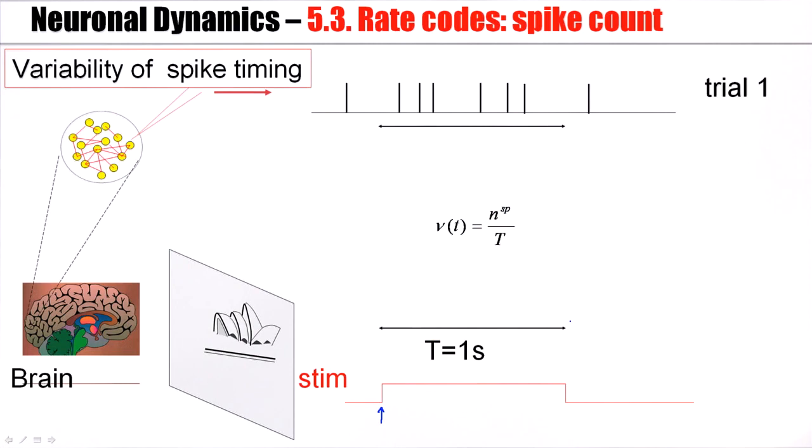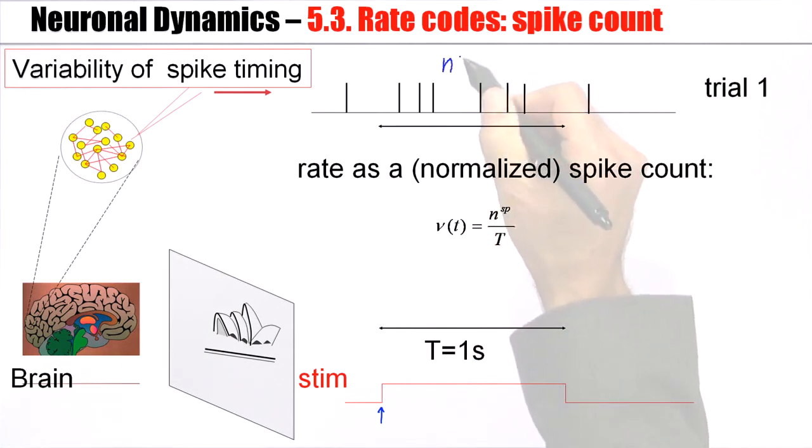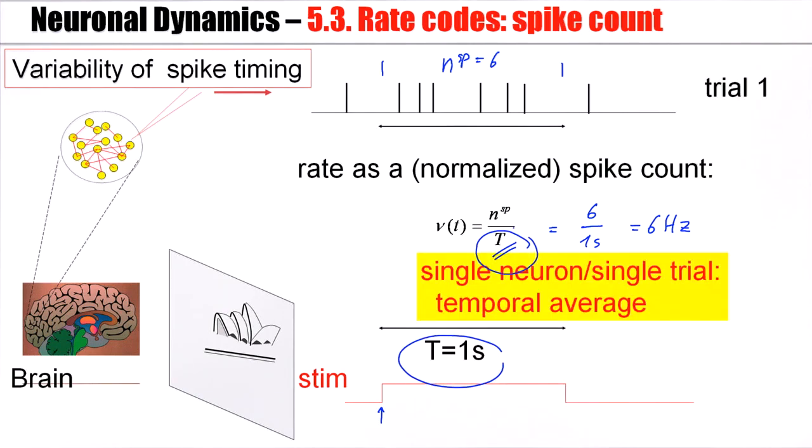There are many spikes during the presentation of the stimulus. One thing you can do is you count the number of spikes. In this case here we would have six spikes in the period during the presentation of the stimulus. Then you divide by the duration of the stimulus. Suppose the stimulation time is one second. So I have six spikes in one second, or a firing rate of six hertz. The rate in this case is a normalized spike count, normalized by the duration T of the measuring interval. In order to evaluate the rate you just have to measure a single neuron for a single trial, but you have to average over time.